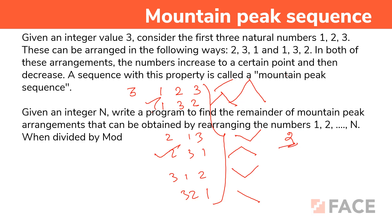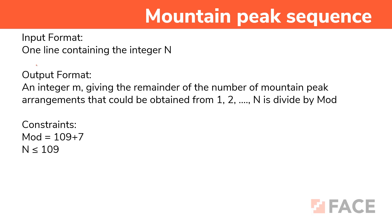This is the question. Given an integer n, write a program to find the remainder of the mountain peak arrangements that can be obtained by rearranging the numbers 1 to n when divided by mod. The mod value is 10 power 9 plus 7. The input is one line containing the integer value. The output is an integer giving the remainder of the number of mountain peak arrangements divided by that mod value. The constraint is n less than or equal to 10 power 9.